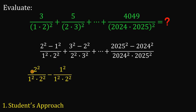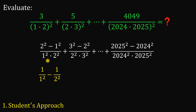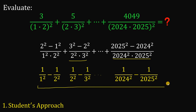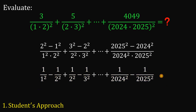From here we can eliminate 2 squared over 2 squared, which is just 1, and 1 squared over 1 squared, which is just 1. This simplifies to 1 over 1 squared minus 1 over 2 squared. We do the same to the rest of the terms, so the second term is 1 over 2 squared minus 1 over 3 squared, and the pattern continues until the last term: 1 over 2,024 squared minus 1 over 2,025 squared. We're going to add all of them.